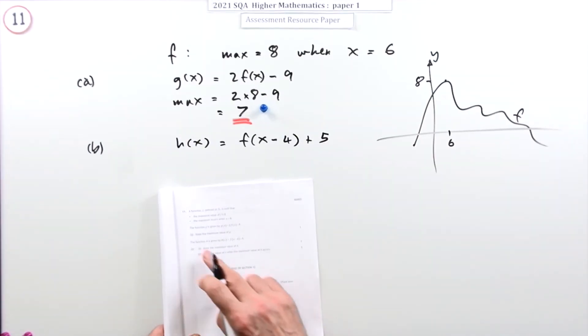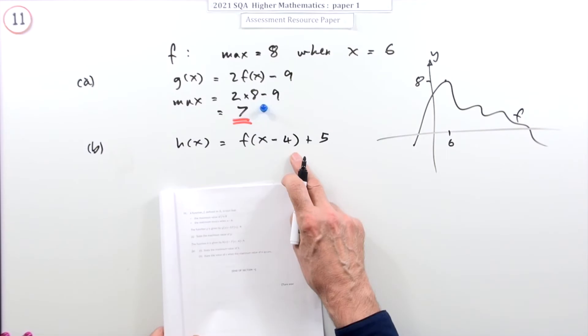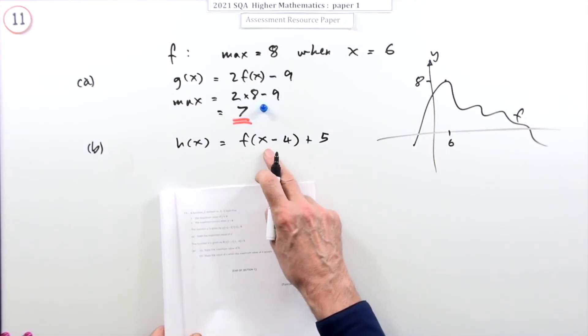Now b, here's a new function h which is equal to f(x - 4) + 5. Notice there's a shift here.